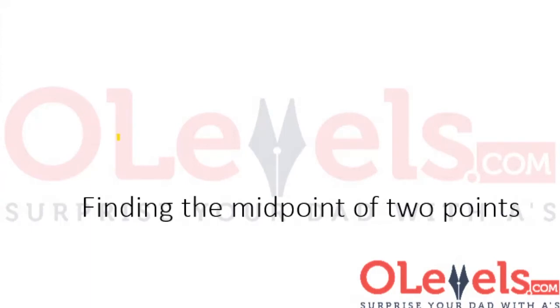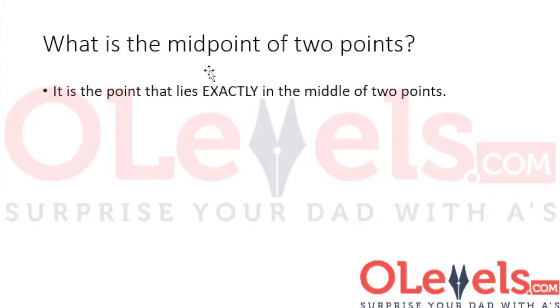Finding the midpoint of two points. Now first of all, what exactly is the midpoint? The midpoint, as the name suggests, is a point that lies exactly between two points. For example, this is city A and this is city B. We can think of these as two points. The point that will lie exactly in the middle of these two points is what we can call the midpoint.